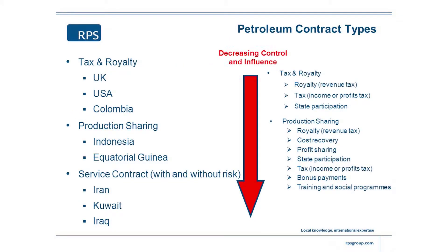And finally, we need to know about the fiscal terms, as a slide I've used in the previous presentation. We need to actually know what the contract — and all the petroleum contracts and all the fiscal terms — is deciding: how we divide up the revenue between the stakeholders. The stakeholders in this case being the oil and gas companies and the government.